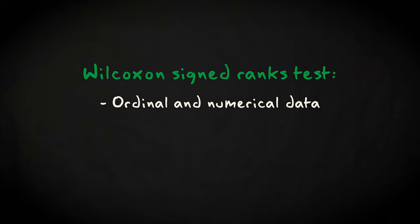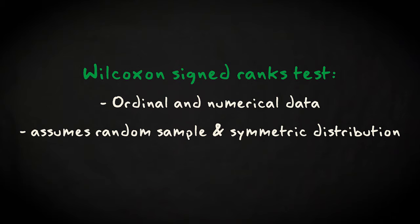Let me summarize what I explained in this video. The Wilcoxon signed ranks test uses data that is ordinal or numerical, and assumes that these are independent and identically distributed samples from a symmetric distribution. It tests the null hypothesis that the population median equals a theoretical value.